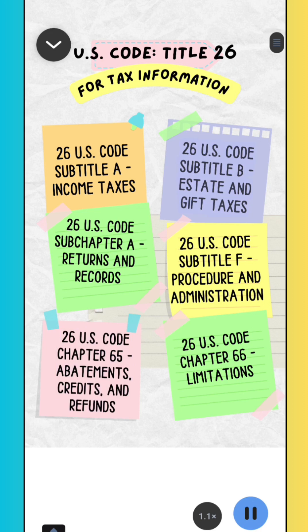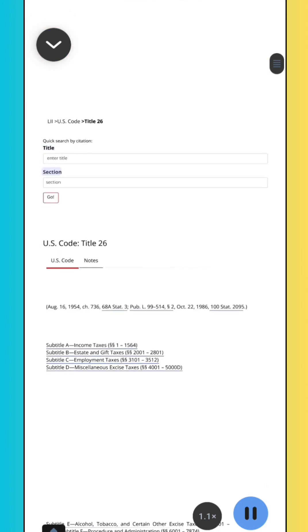26 U.S. Code Subtitle B, Estate and Gift Taxes. 26 U.S. Code Subtitle A, Income Taxes. 26 U.S. Code Subchapter A, Returns and Records.